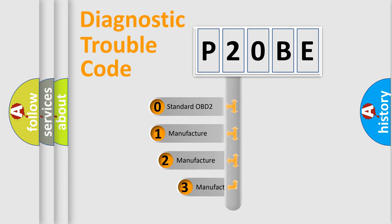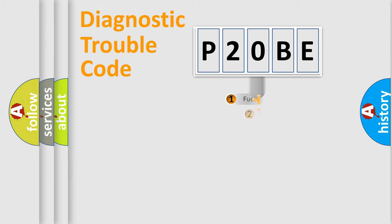If the second character is expressed as zero, it is a standardized error. In the case of numbers 1, 2, or 3, it is a manufacturer-specific expression of the car-specific error.